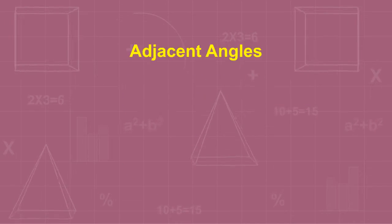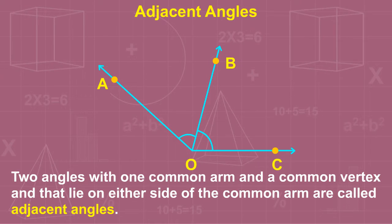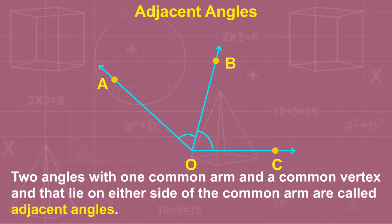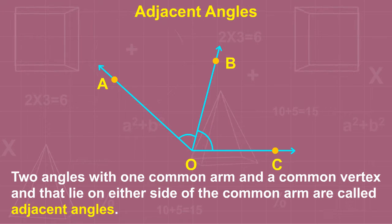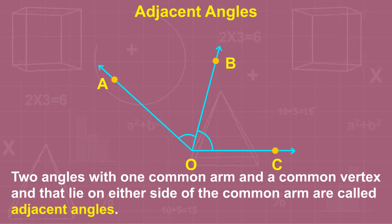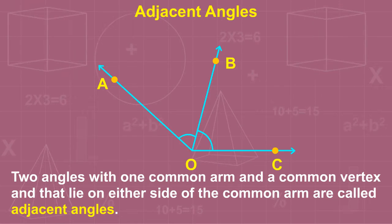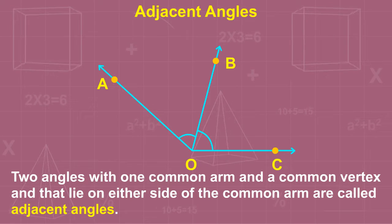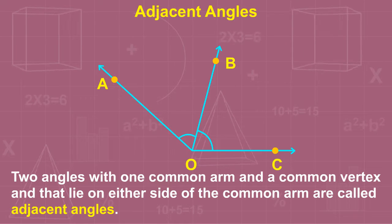Two angles with one common arm and a common vertex that lie on either side of the common arm are called adjacent angles. The shown figure is an example of adjacent angles.